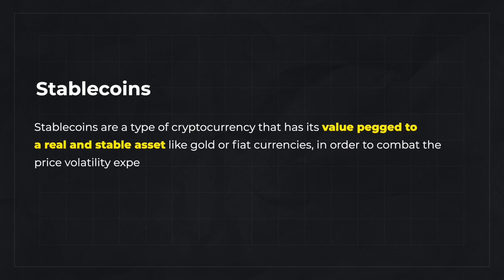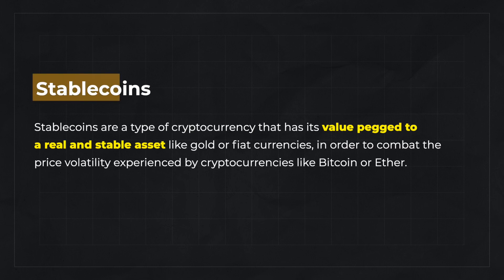Stablecoins are a type of cryptocurrency whose value is pegged to a real-world and stable asset like gold or any other fiat currency. The main purpose of stablecoins is to combat the volatility of other cryptocurrencies. With that, let's look at the specific use cases of stablecoins.